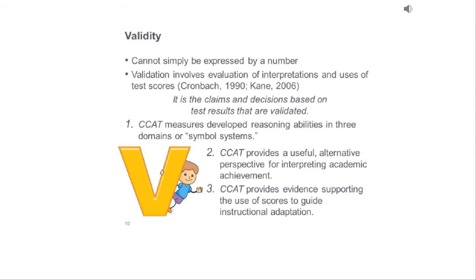Although it's difficult to express validity simply in a number, one of the things we know about CCAT is it measures developed reasoning skills in three domains or symbol systems. The important word there is 'developed.' Intelligence, as we previously understood and measured it, is not a stagnant number — it can change. There are many things that influence our ability to learn and understand. So when we're selecting children for special programs, particularly gifted programs, we know that at certain points in their educational journey they may not qualify, but at a different point they may — particularly students who may be new to Canada or who have been out of school due to illness or other circumstances. CCAT also provides an alternative perspective for understanding academic achievement.